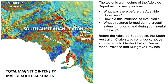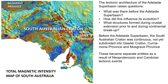Before the Adelaide Superbasin, we had the South Australian craton — a Precambrian craton that was continuous, not yet subdivided into the Gawler Craton, Curnamona Province, and Musgrave Province that we're familiar with today. These only became separate entities as a result of Neoproterozoic and Cambrian tectonic events.